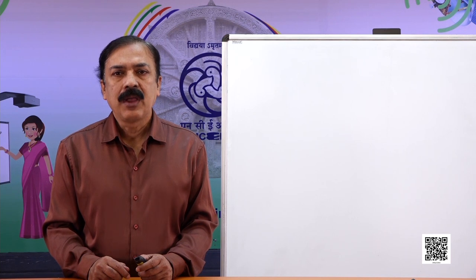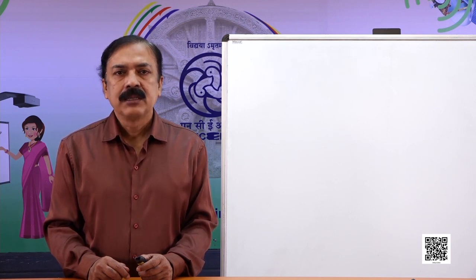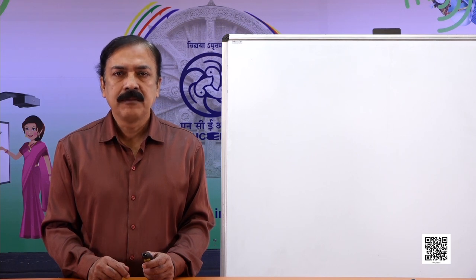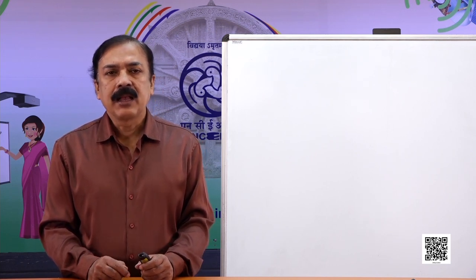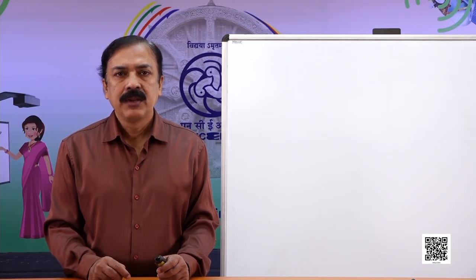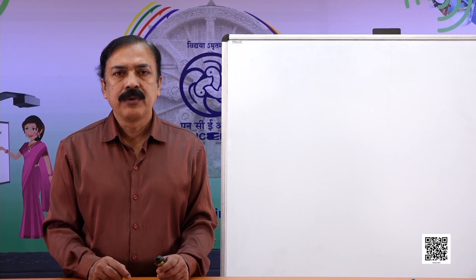Here we have a cyclic quadrilateral, which we will discuss shortly. First, let us recap something very helpful for this session. The angle subtended by an arc at the centre is double the angle subtended by it at any point on the remaining part of the circle. This is Theorem 10.8, whose proof we discussed earlier. Here we will apply it.